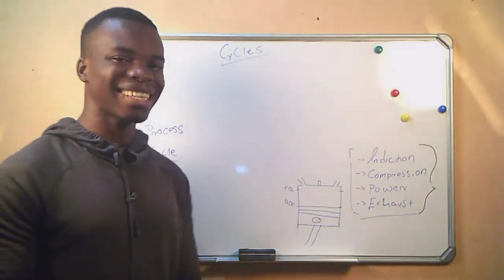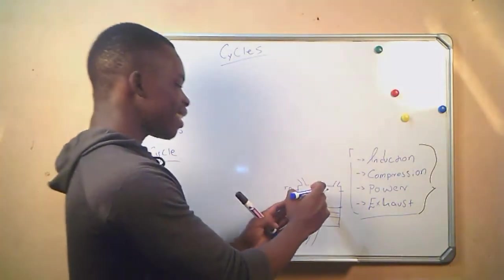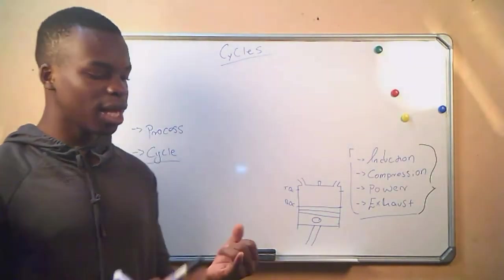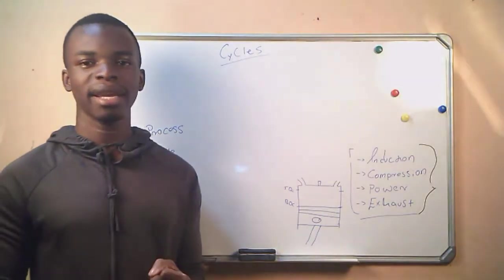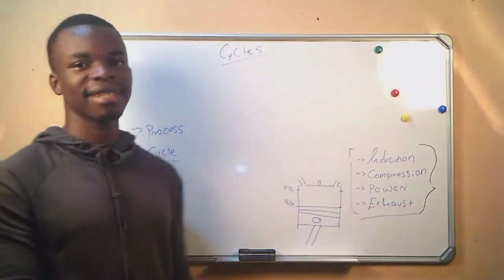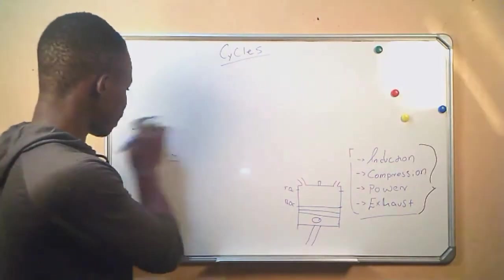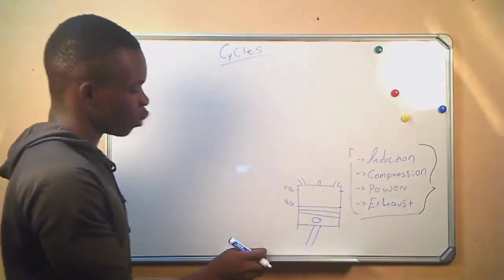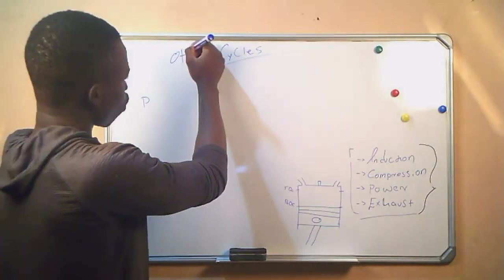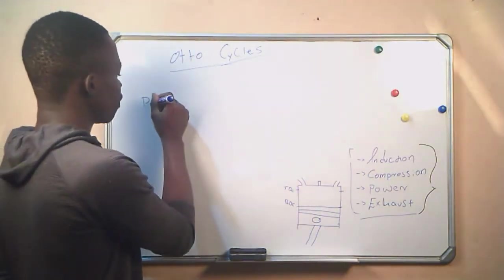But what we are interested in, in this chapter, is what is happening inside the cylinder — taking into consideration the pressure, the temperature, and the volume as the cycle is taking place inside the cylinder. To get that, we are going to draw what we call a PV diagram. We will start with a process, a cycle called the Otto cycle, and draw a PV diagram.